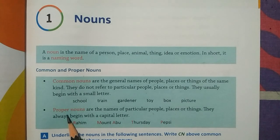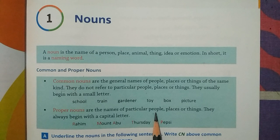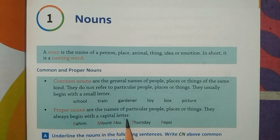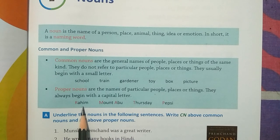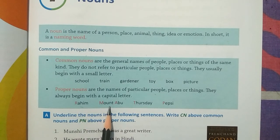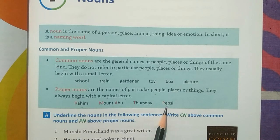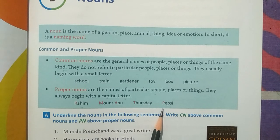Now come to the proper noun. Proper nouns are the names of particular people, places or things. They always begin with a capital letter. For example: Raheem is the name of a boy, Mount Abu is the name of a hill, Thursday is the name of a day. These are all written in capital letters because they are all proper nouns.